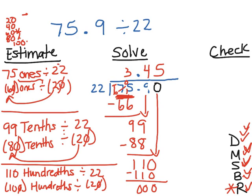So it looks like my answer is going to be 3 and 45 hundredths. But let's check. How do you check? What's the rule? Multiply the quotient times the divisor.